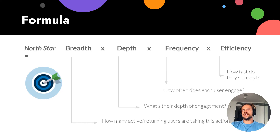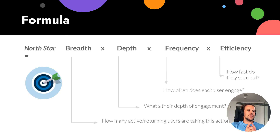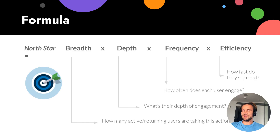Now, how do you calculate a Northstar metric? Usually we can make a decomposition into four pieces. First is breadth: how many returning users are taking this action — active users. Second is depth: how deep is the engagement. Third is frequency: how often does the user engage. And fourth is efficiency: how fast do they succeed, or do they succeed at all.